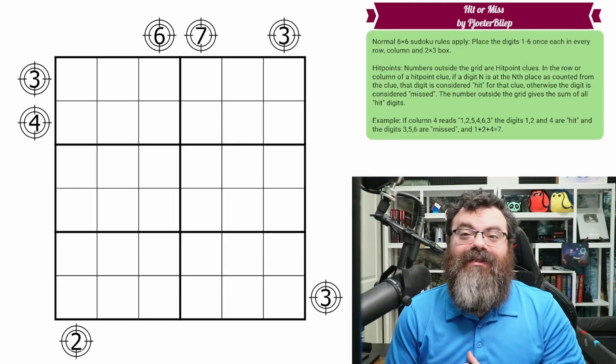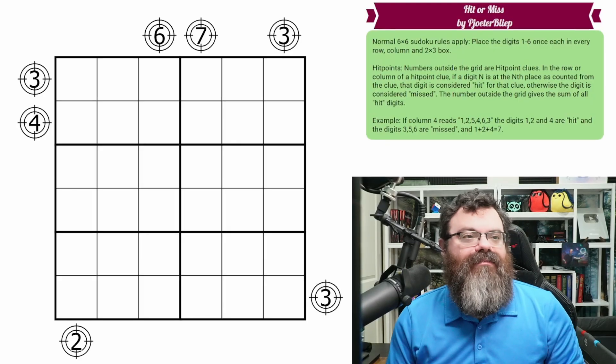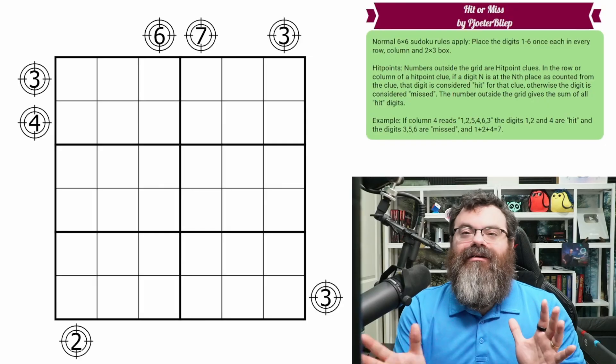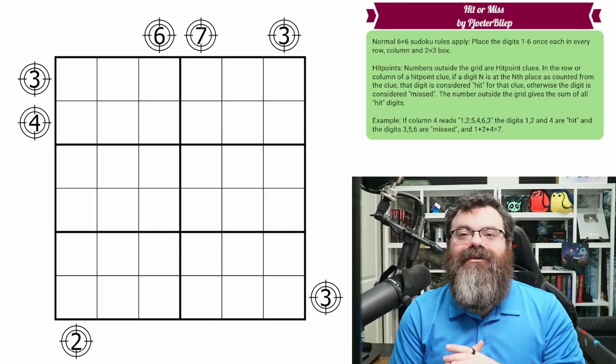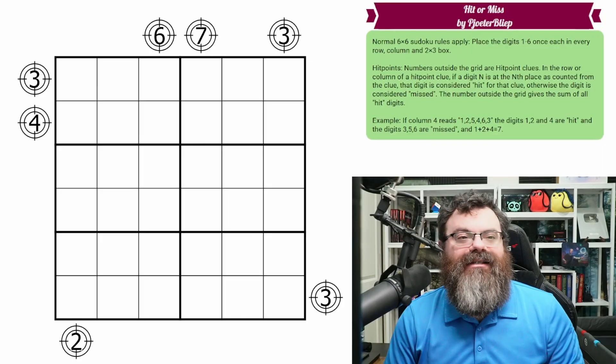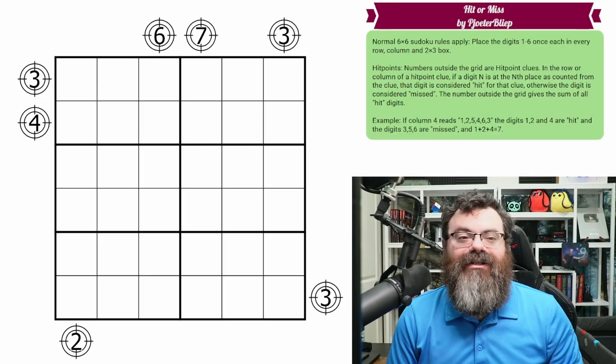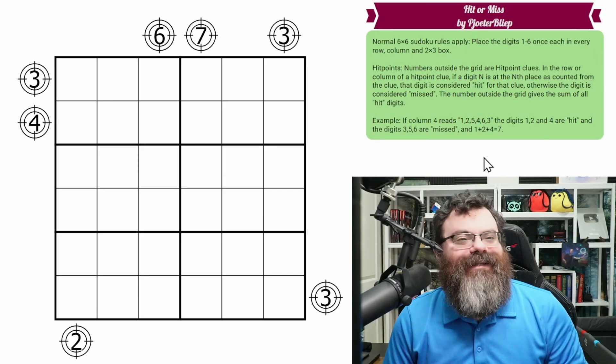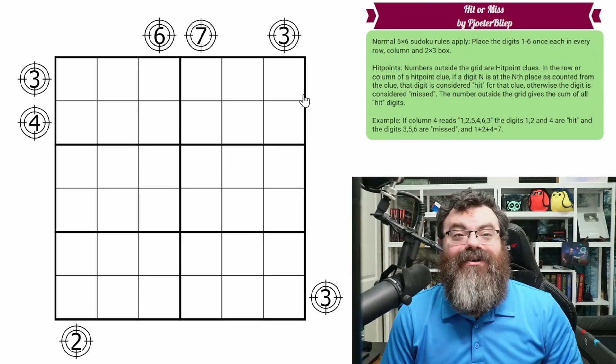But the theme this week is indexing. So indexing is basically just anything that involves counting - counting along a line, counting along a row or column, counting rows and columns in general, that sort of thing. So indexing is the theme and we'll be visiting a bunch of constraints that involve counting. Make sure your fingers are working. Well, let's go over the rules for this one.